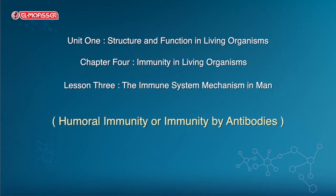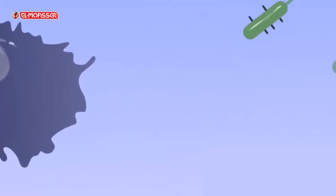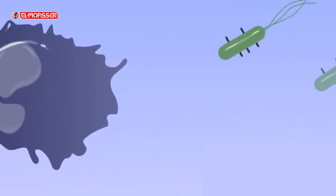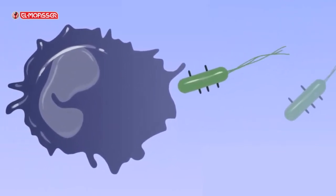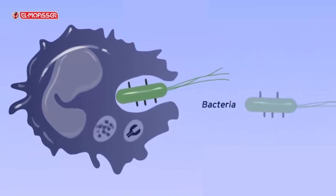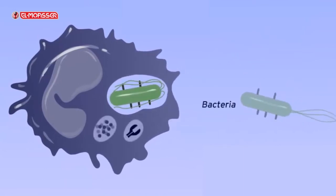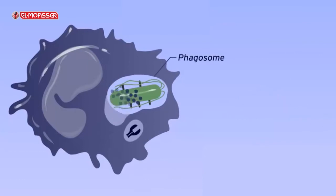Humoral immunity, or immunity by antibodies, is considered one of the immune response mechanisms that represents the third line of defense. It begins with the recognition by macrophages of microbes such as bacteria and their engulfment.